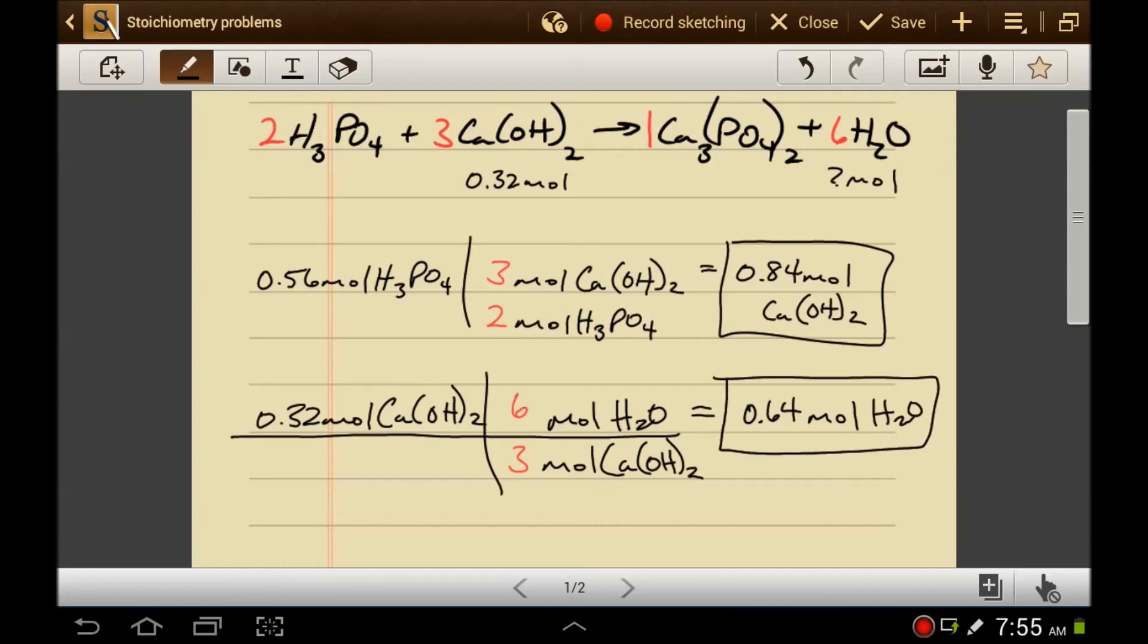So that's all stoichiometry is. That's it. It's just using the mole-to-mole ratio to convert one type of molecule into another from the balanced coefficient, and you can go from any one to anything else.